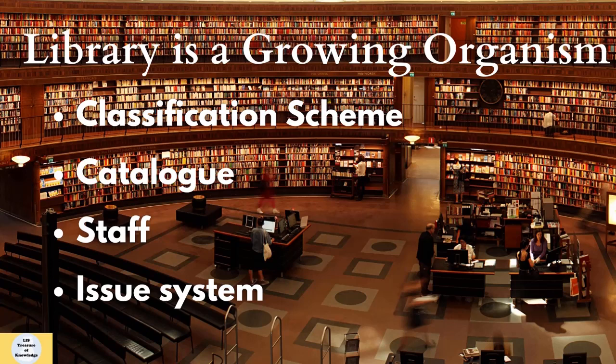The fifth law: Library is a growing organism. This law represents the planning, coordination, and organization of the library. Library materials, rules, and physical infrastructure should be updated over time. The library's growth is very important to improve its collection and attract more users. Libraries should adopt a proper scientific classification scheme.